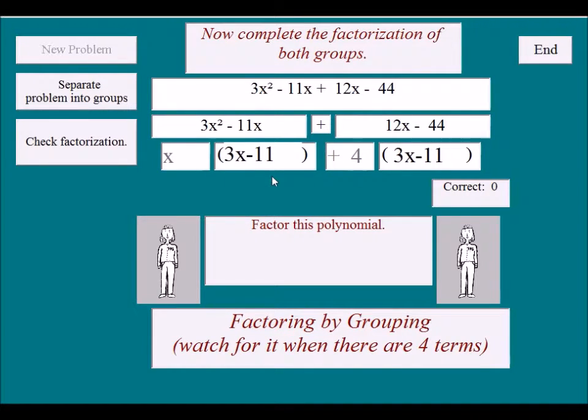Now factoring by grouping has been done incorrectly if you don't end up with this awesome coincidence. We have a 3x minus 11 and a 3x minus 11 in both of these quantities. If you don't get that coincidence, you better start over again. So we'll check the factorization.